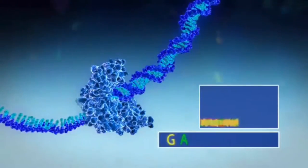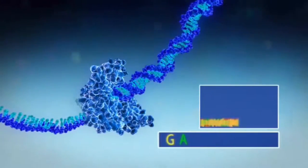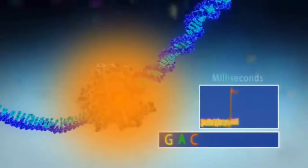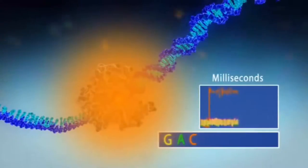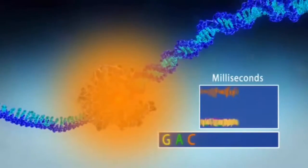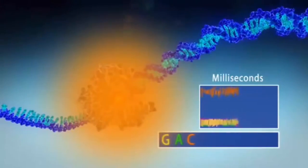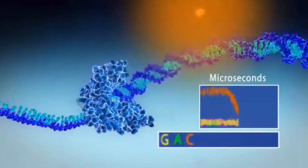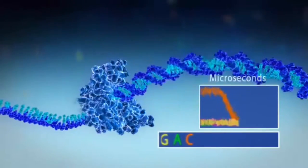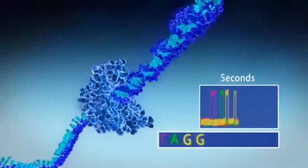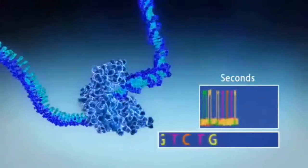Nucleotides diffuse in and out of the ZMW in microseconds. When the polymerase encounters the correct nucleotide, it takes several milliseconds to incorporate it, during which time its fluorescent label is excited, emitting light that's captured by a sensitive detector. After incorporation, the label is clipped off and diffuses away. The whole process repeats, creating sequential bursts of light corresponding to the different nucleotides. These are recorded, thus building the DNA sequence.